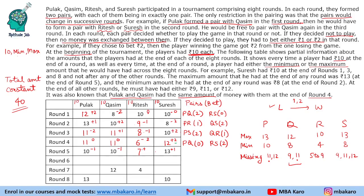In round 6, there are changes of minus 1, minus 1, plus 1, plus 1 — we cannot immediately determine who is paired with whom since minus 1 could pair with either option. Round 7 also has no information available, so we cannot fill that round directly.